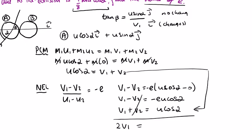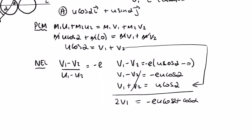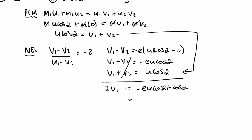Bringing this down, v1 plus v2 equals u cos alpha. So 2v1, canceling out my v2, equals negative e u cos alpha plus u cos alpha. We'll factor out the cos alpha: u cos alpha times negative e plus 1 equals 2v1. So v1 equals u cos alpha times 1 minus e over 2.